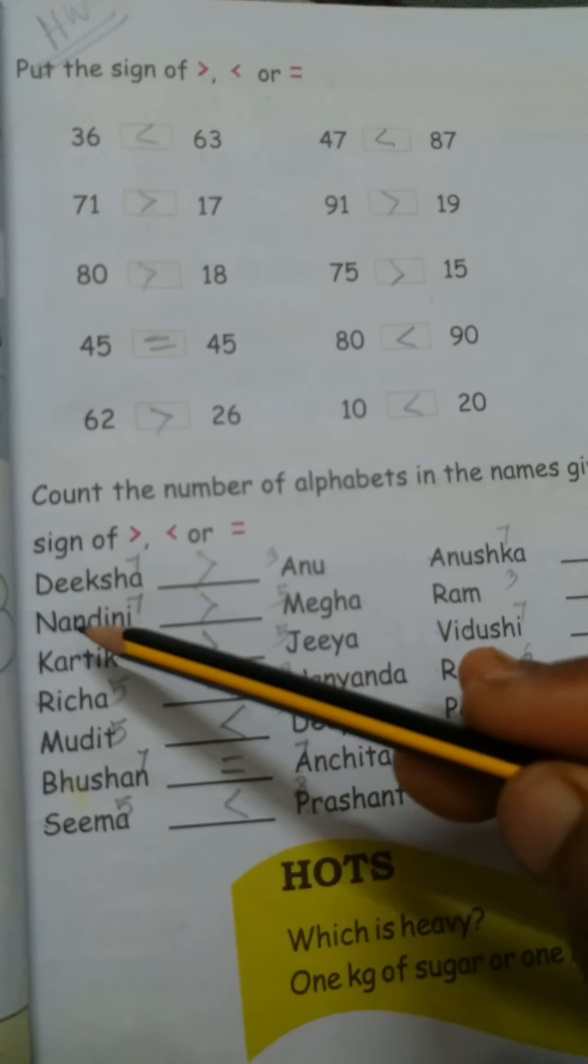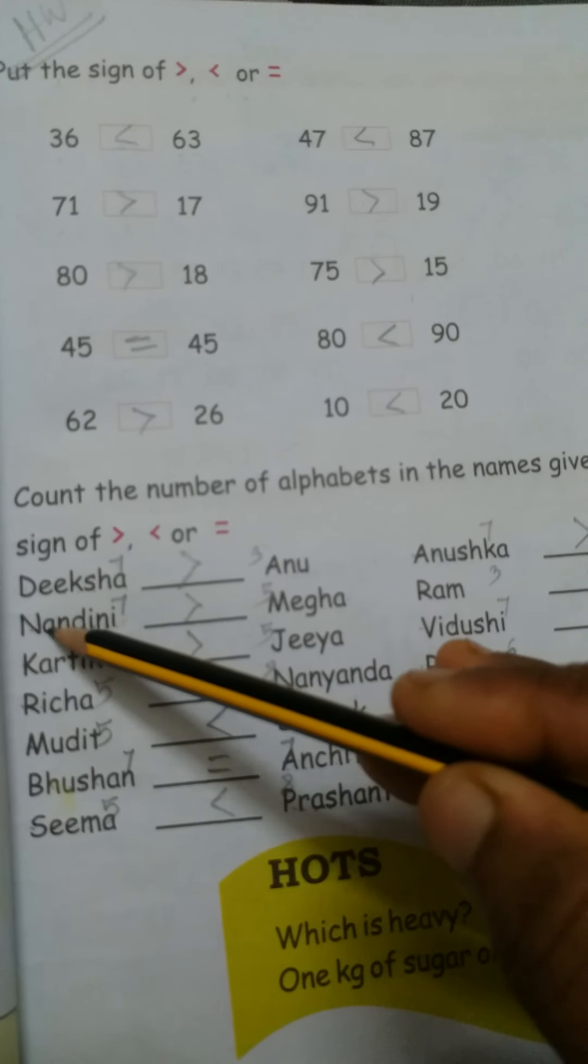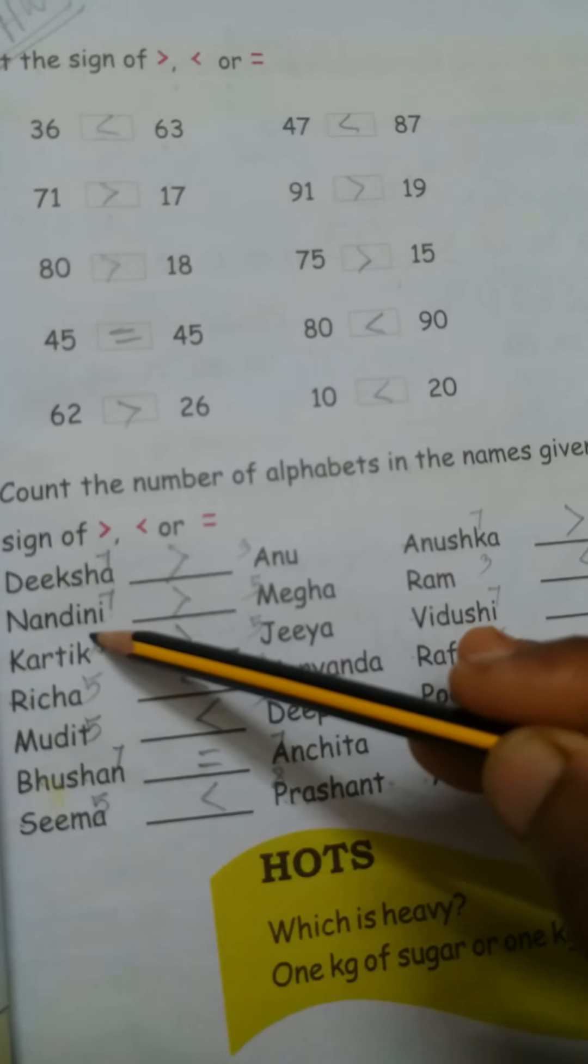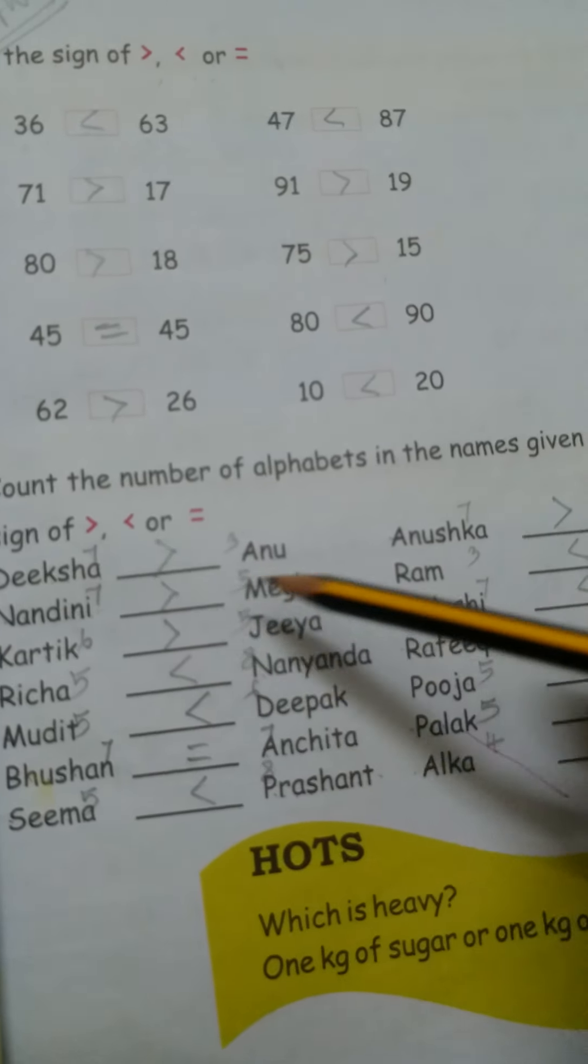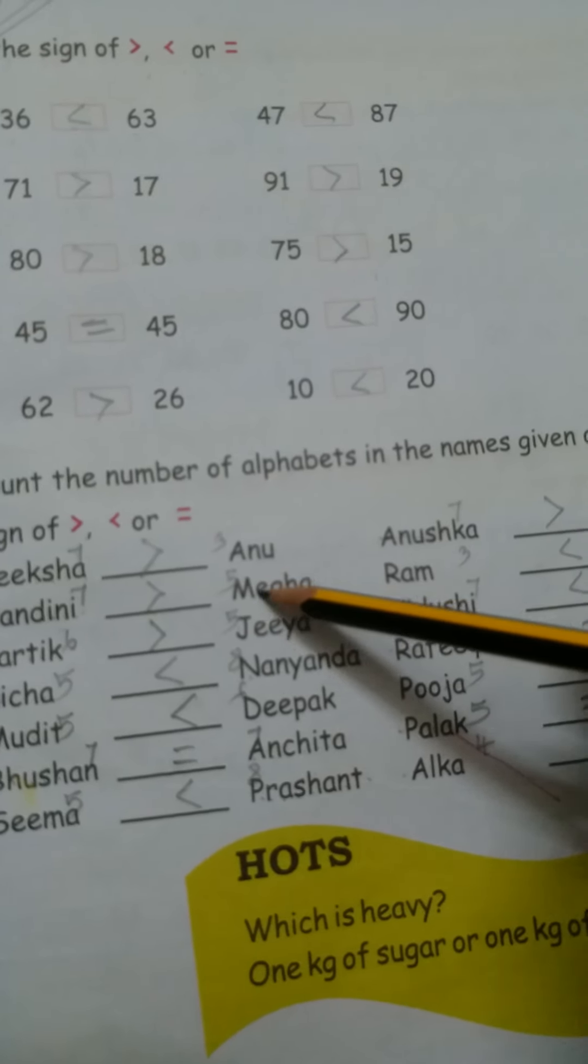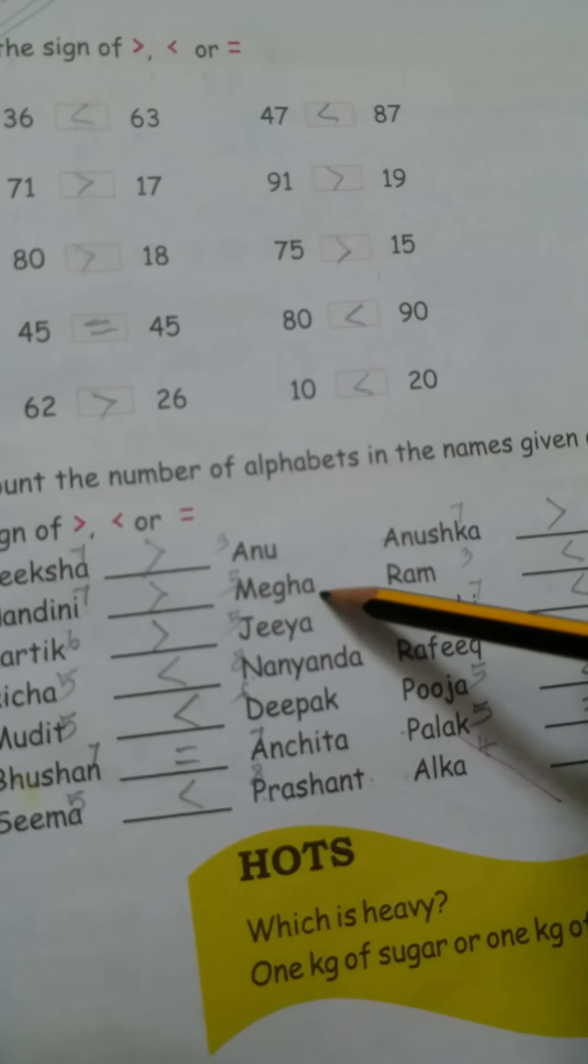Understood? Then, Nandini, 1, 2, 3, 4, 5, 6, 7, this is also 7, right here 7. And another name is Megha, M-E-G-H-A, Megha, how many?